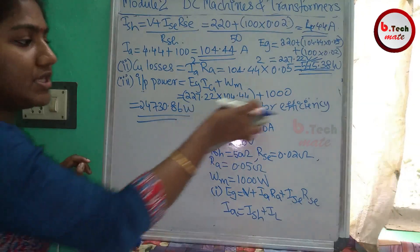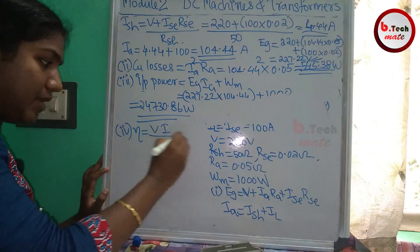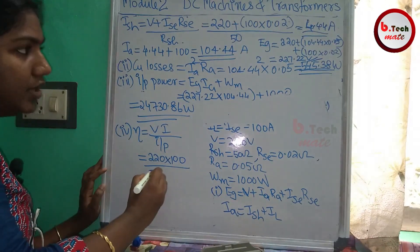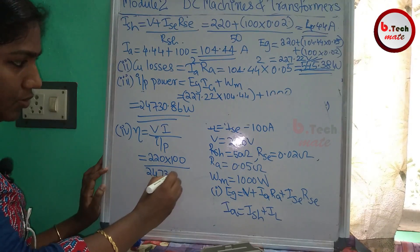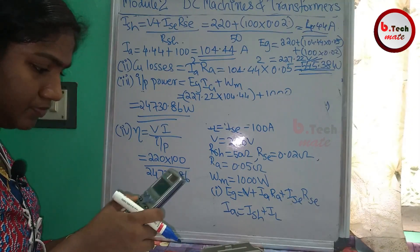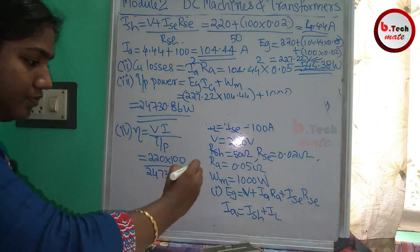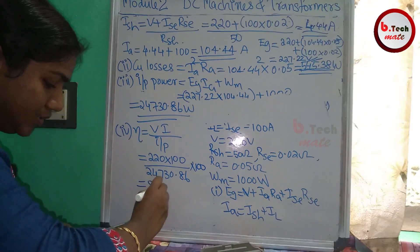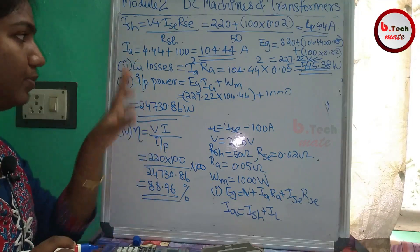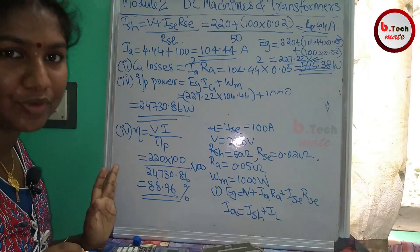The overall efficiency equals output power divided by input power, which is V times IL divided by input power: 220 times 100 divided by 24730.86, multiplied by 100, giving an efficiency of 88.96%. This completes the power flow equations and power stages for the short shunt compound generator.